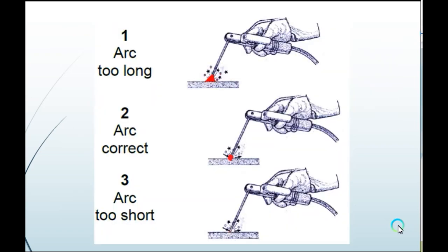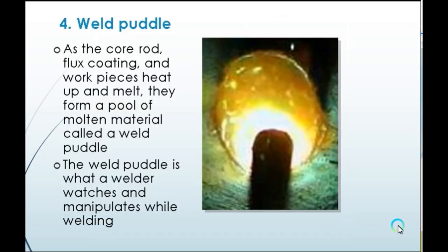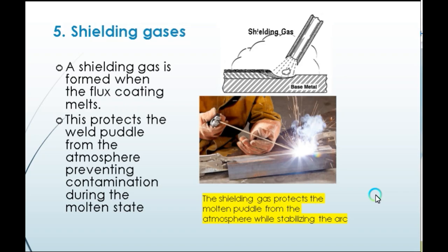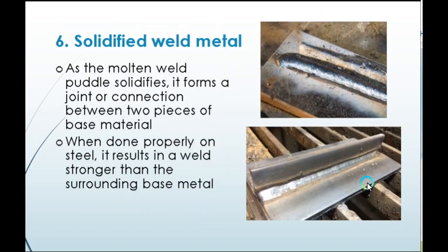Different types of welding arc are shown — a long arc means high voltage and a short arc means low voltage. As the core rod, flux coating, and workpieces heat up and melt, they form a pool of molten material called the weld puddle. A shielding gas is formed when the flux coating melts, which protects the weld puddle from the atmosphere, preventing contamination during the molten state. As the molten weld puddle solidifies, it forms a joint between two pieces of base material. When done properly on steel, it results in a weld stronger than the surrounding base metal.